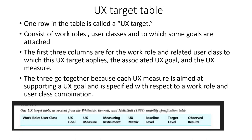The next parameter is UX target table. The UX target table is used to measure usability using various parameters. Each row in this table is called a UX target. The first three parameters are work role, which consists of user class, UX goal, and UX measure. All three go hand in hand, as the UX measure is aimed at supporting the UX goal and is specified with respect to work role and user class.